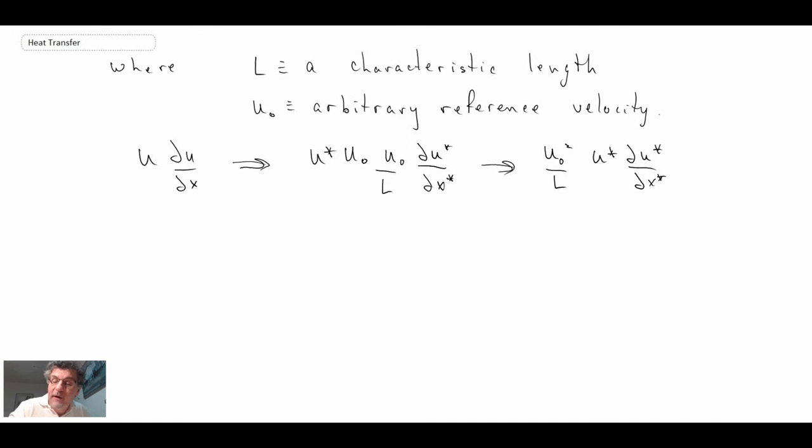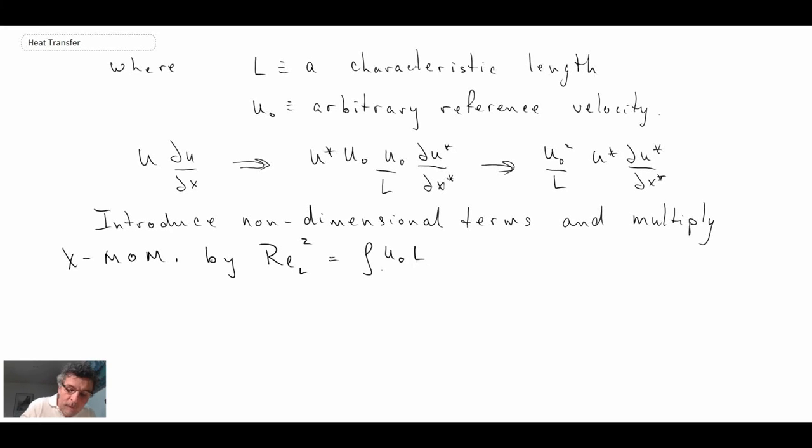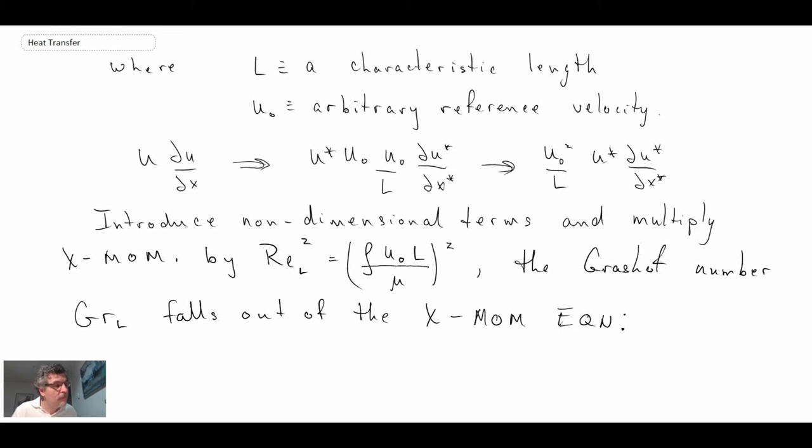So if we do that for all the different terms, we'll result in a new equation. I won't go through all of that. But if we take that final equation that we've non-dimensionalized and we multiply it by the Reynolds number squared, a new non-dimensional number will drop out. And that number we refer to as being the Grashoff number. So with this, what happens is the Grashoff number comes out of our x-momentum equation. And the Grashoff number, we have not seen it yet, but it is expressed in the following manner.